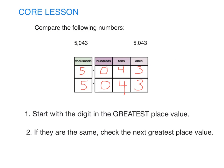Boom! Five thousands and five thousands are the same, zero hundreds and zero hundreds are the same, four tens and four tens are the same, and three ones and three ones are the same. 5,043 is equal to 5,043.